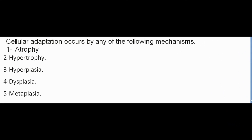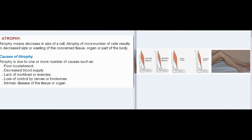Atrophy means decrease in size of a cell. Atrophy of more cells results in decreased size or wasting of the concerned tissue, organ, or part of the body. Causes of atrophy include poor nourishment, decreased blood supply, lack of workload or exercise, loss of control by nerves or hormones, and intrinsic disease of the tissue or organ. Atrophy is of two types: physiological atrophy — examples are atrophy of thymus in childhood and tonsils in adolescence — and pathological atrophy, which is common in skeletal muscle, cardiac muscle, sex organs, and brain.